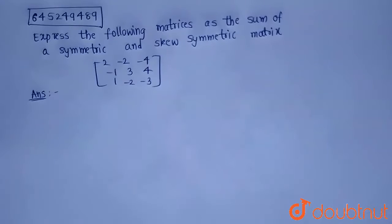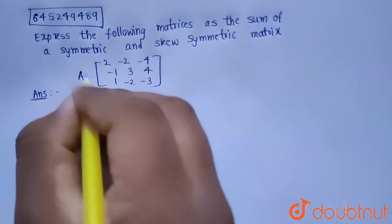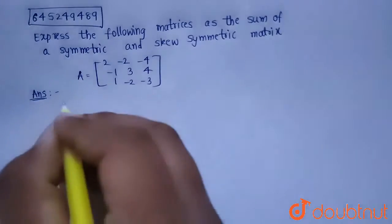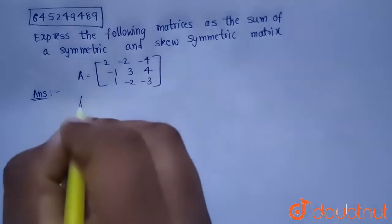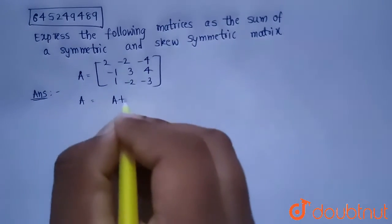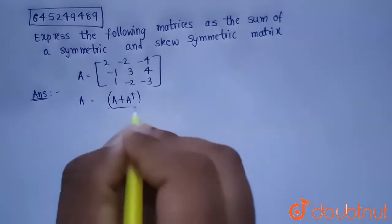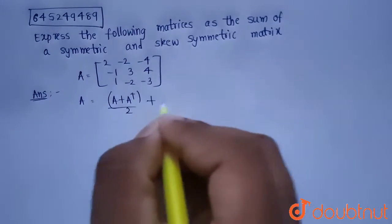Today's question is: express the following matrix as the sum of a symmetric and skew-symmetric matrix. Let's assume this matrix as A. We know that a matrix A can be written as the sum of a symmetric matrix and a skew-symmetric matrix.